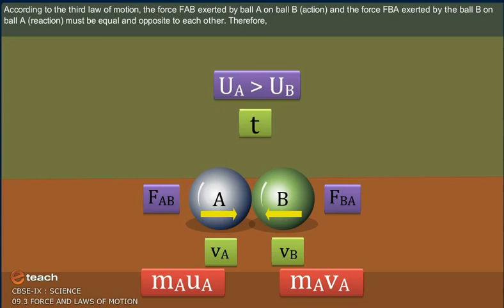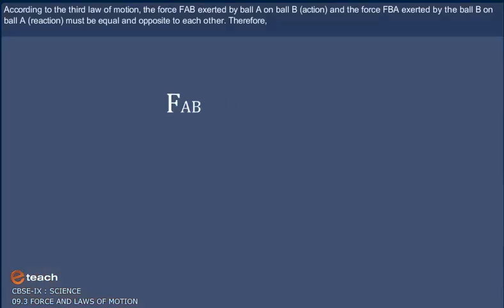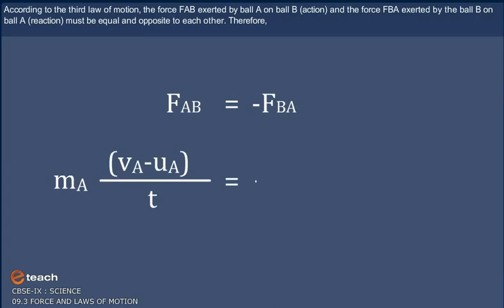According to the third law of motion, the force FAB exerted by ball A on ball B (action) and the force FBA exerted by ball B on ball A (reaction) must be equal and opposite to each other. Therefore, FAB equals negative FBA, or MA(VA minus UA) divided by t equals negative MB(VB minus UB) divided by t.